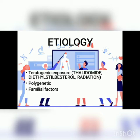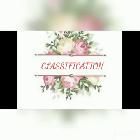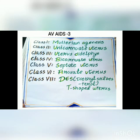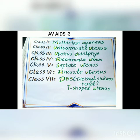Thalidomide was developed in the 1950s for morning sickness and cold/flu in pregnant women. Diethylstilbestrol was used in the 1940s–1950s and was found to affect the female genital system of the fetus. Other etiological factors include polygenic factors such as PAX2, and familial inheritance of mutations. There are seven classification classes: Class 1 Mullerian agenesis, Class 2 unicornuate uterus, Class 3 uterus didelphys, Class 4 bicornuate uterus, Class 5 septate uterus, Class 6 arcuate uterus, and Class 7 DES T-shaped uterus.